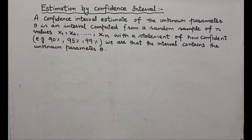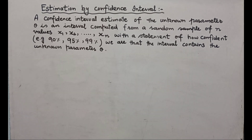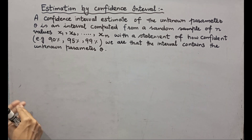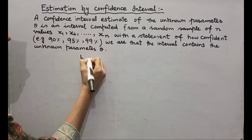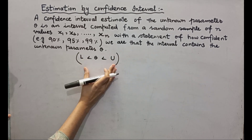So what is Confidence Interval Estimation? What is the unknown parameter? It is an interval that we compute with random samples, and then we have confidence that the unknown parameter theta value lies within it. We show that L is less than theta, or we can say that it is the interval in which the unknown parameter theta value lies.